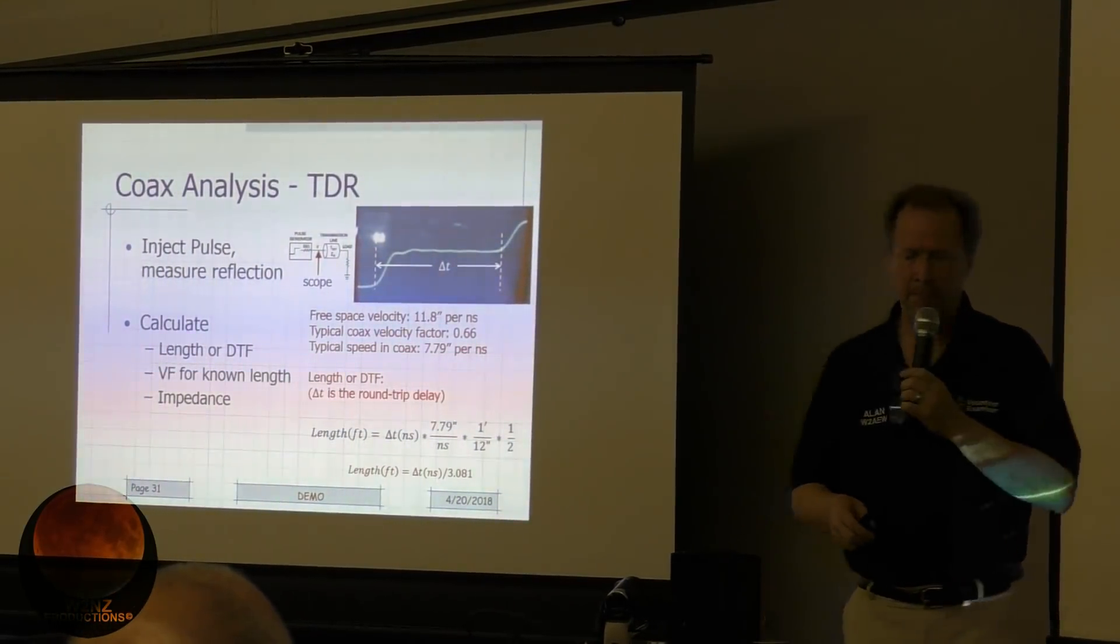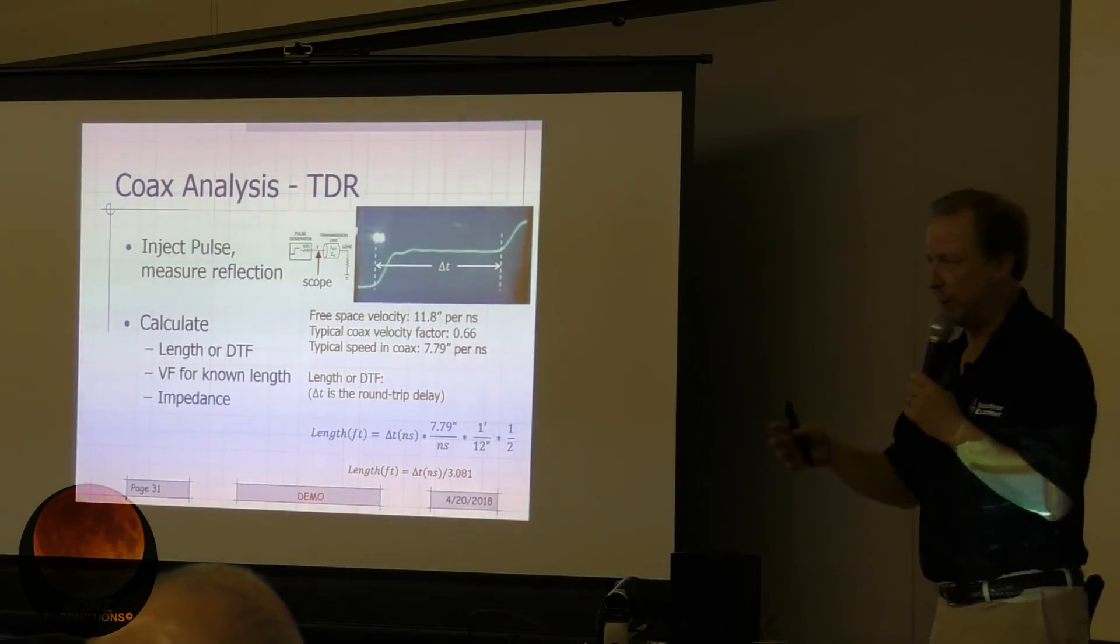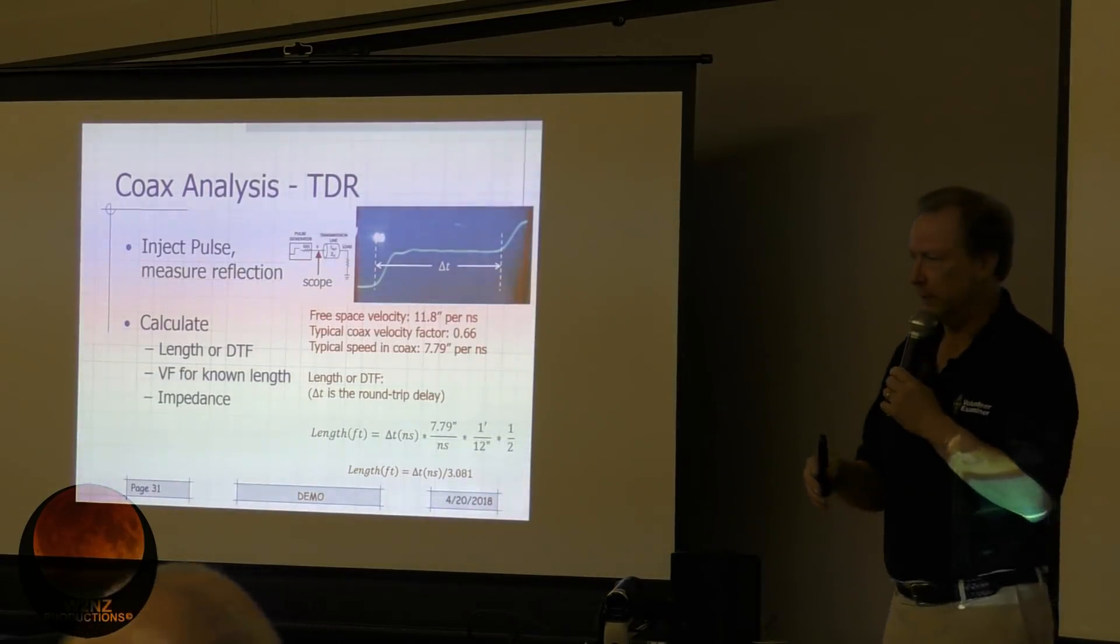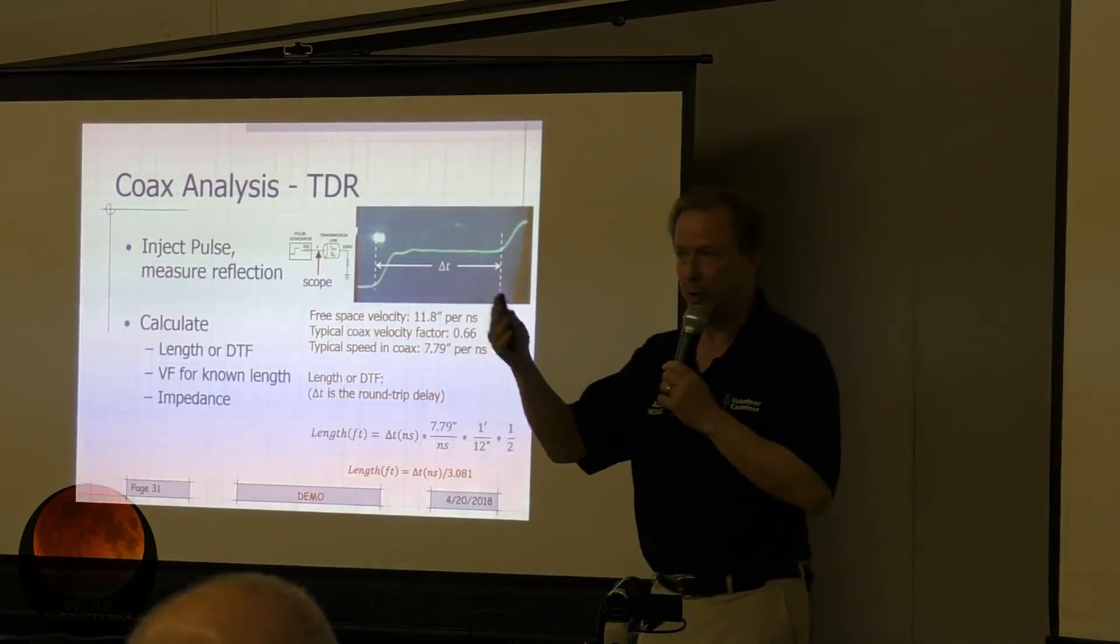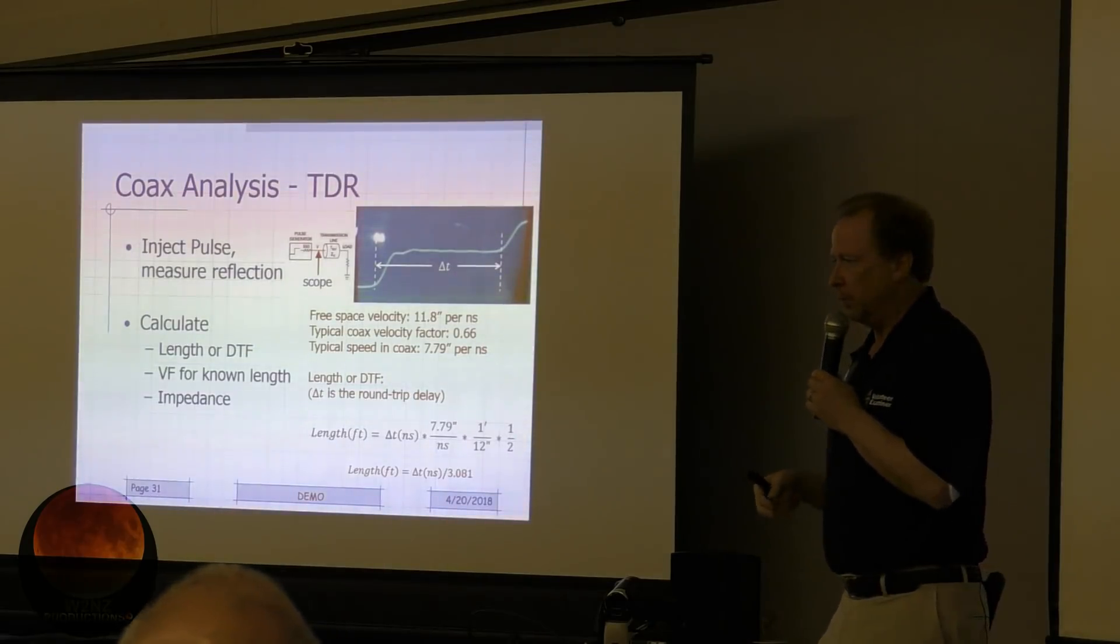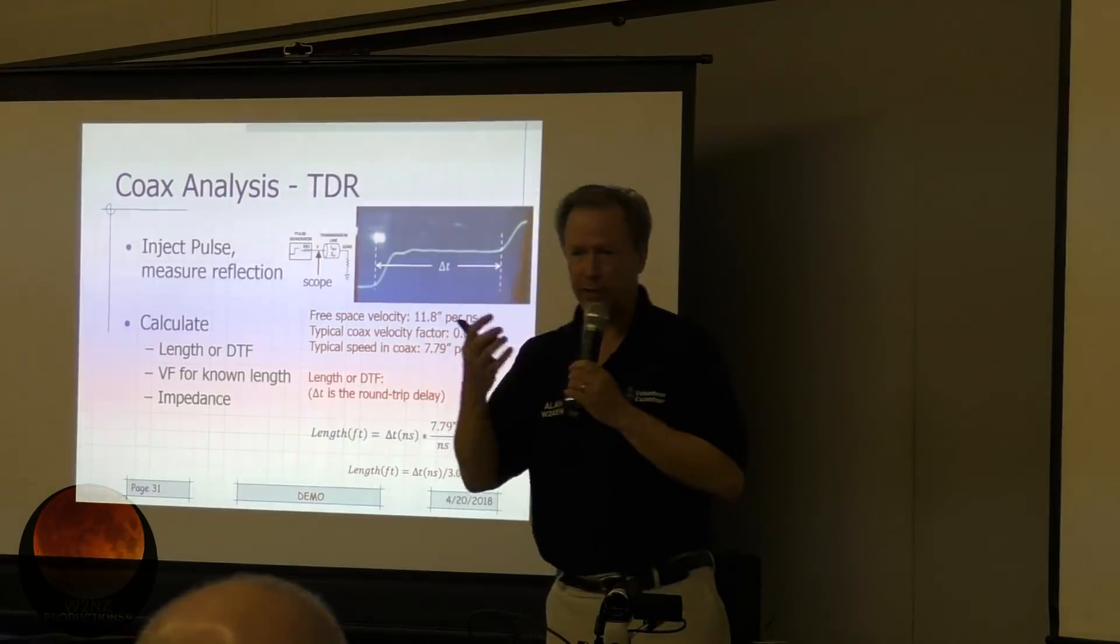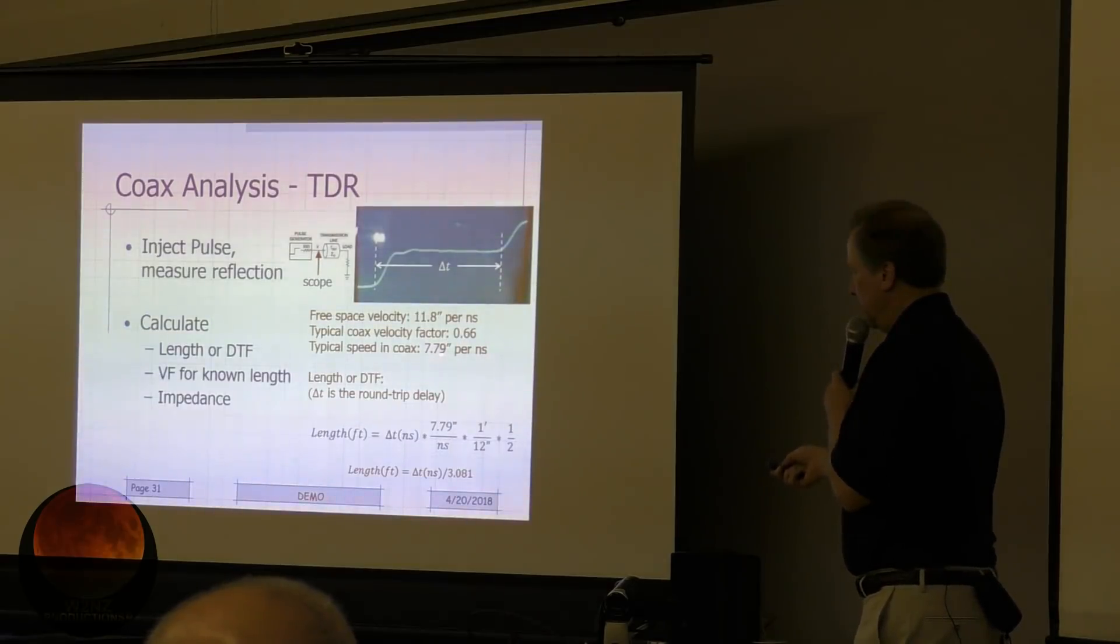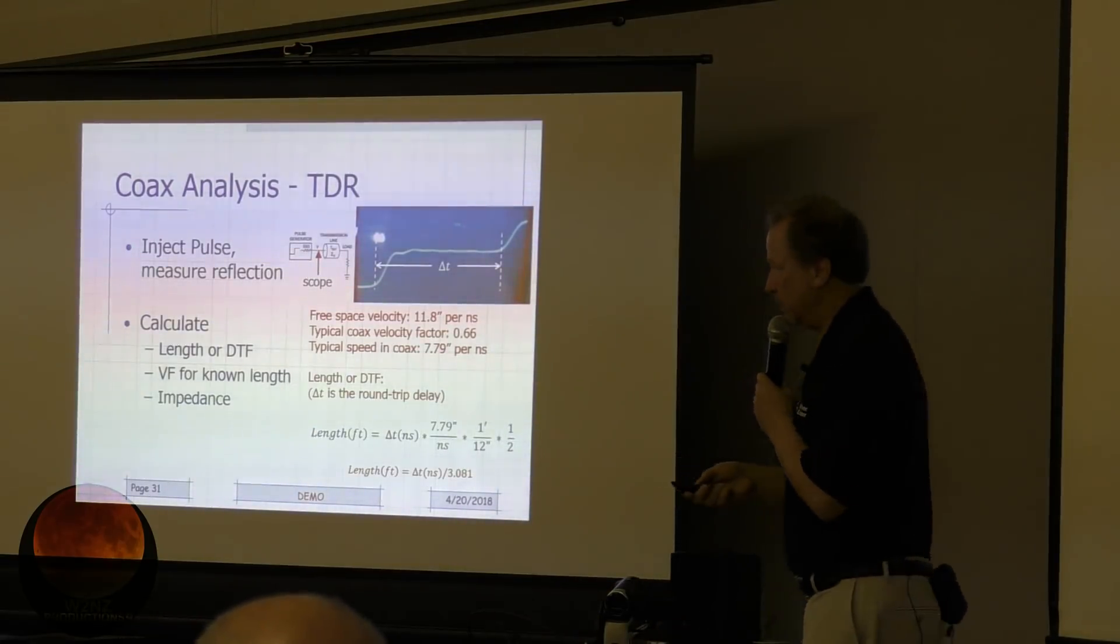Here's another really interesting example: measuring the length of coax. We're going to do something called time domain reflectometry. As we all know, signals don't get from point A to point B instantaneously. There is a propagation delay, a propagation velocity for these RF signals. In free space, we're at 300 million meters per second, 186,000 miles a second. It's about a nanosecond per foot, or I should say about 12 inches per nanosecond. It's actually about 11.8 inches per nanosecond in free space. Most of the coax that we typically use, the foam dielectric stuff, is at a 0.66 velocity factor. What that means is that we're running at 66% of that speed of light. So in coax, the signal's going to typically go almost eight inches, a little more than seven and three-quarter inches every nanosecond, every billionth of a second. We can use that to actually make some measurements.